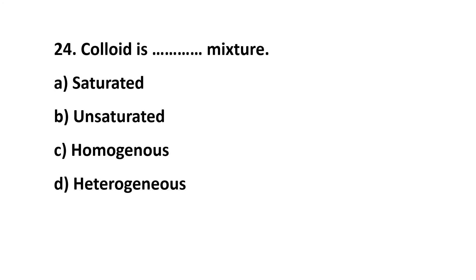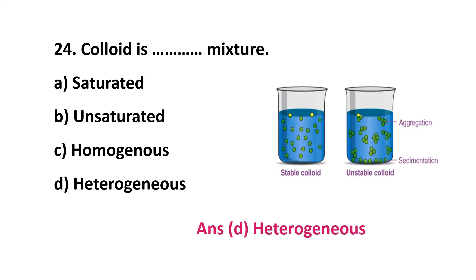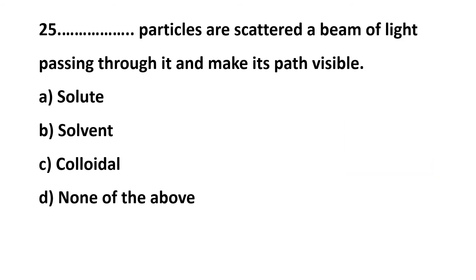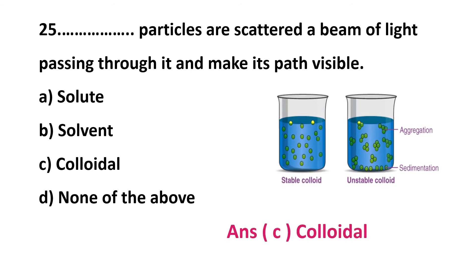Question 24: a colloid is a __ mixture — saturated, unsaturated, homogeneous, or heterogeneous. A colloid is a heterogeneous mixture. Question 25: __ particles scatter a beam of light passing through it and make its path visible — solute, solvent, colloidal, or none of these. The correct answer is option C: colloidal. Colloidal substances only disperse light — they scatter the beam of light.